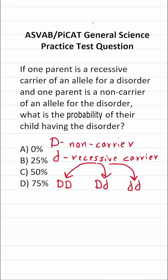Using those two alleles, we can create three genotypes. The genotype big D, big D means this person is a non-carrier of the disorder and they do not have the disorder themselves. The genotype big D, little d means the person does not have the disorder, but they are a recessive carrier of the allele for the disorder, which is little d.